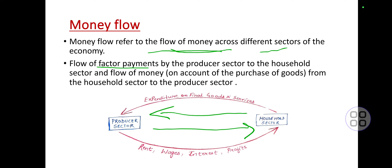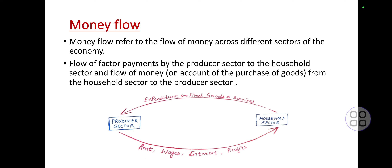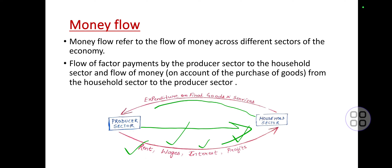Producers pay factor payments to households: for land, the factor payment is rent; for labor, it is wages; for capital, it is interest; and for entrepreneurship, it is profit. So producers provide these factor payments to households, and households in turn purchase those final goods and services.